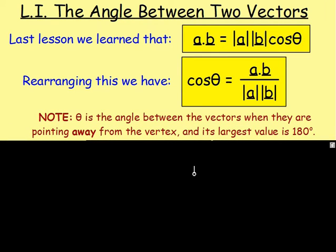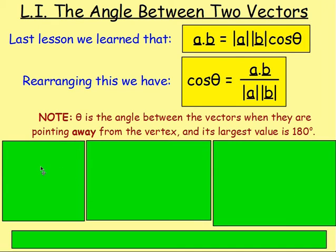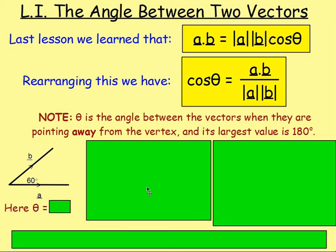A note on that: θ is the angle between the vectors when they are pointing away from the vertex, so the vectors have to be tail to tail. The largest possible value of θ is going to be 180 degrees. Looking at these diagrams — here I've got two vectors, they are tail to tail, pointing away from the vertex, with an angle of 60 degrees between them, so θ is going to be 60 degrees.